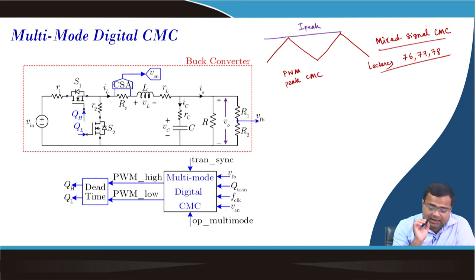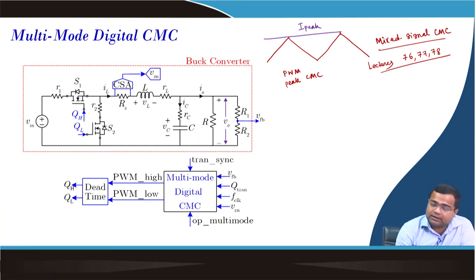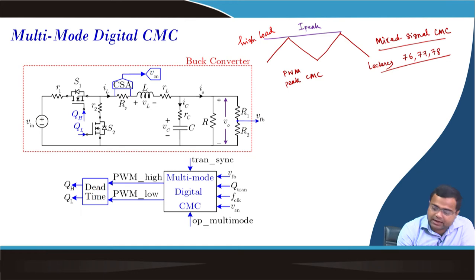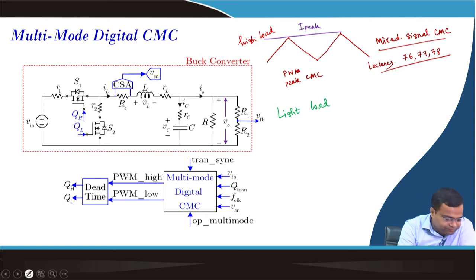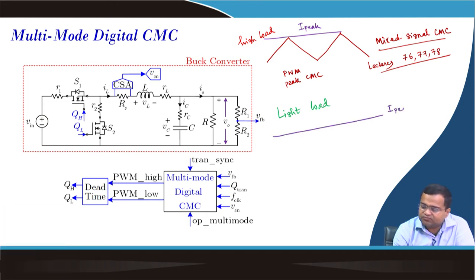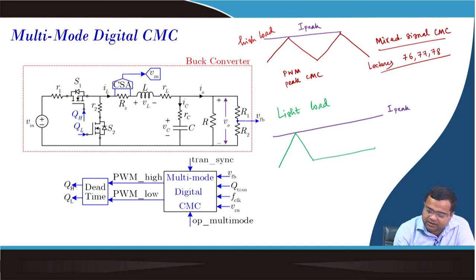Now, there is another thing we want to consider. This is under high load. Now we want to consider under light load. We want to maintain this same peak current based approach. What we can do — we can again take a peak current and we want to now make this peak current based approach work under DCM. We can call it adaptive on-time PFM, where the on-time is getting generated.